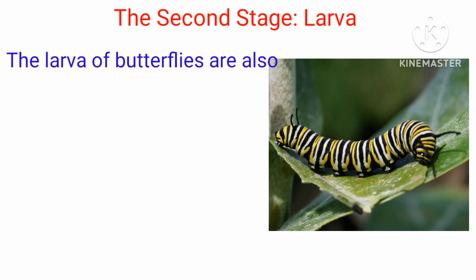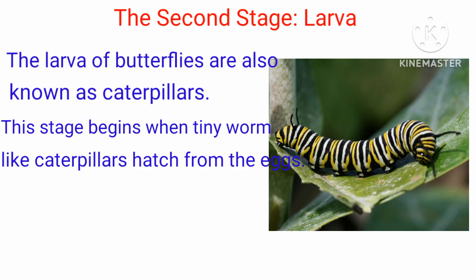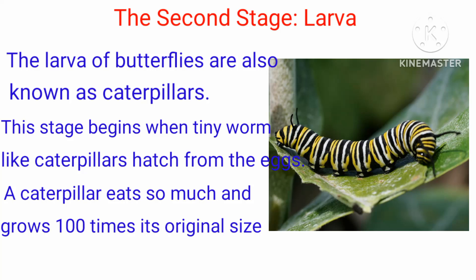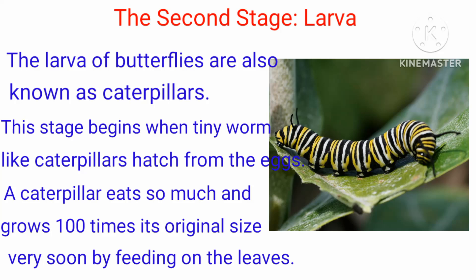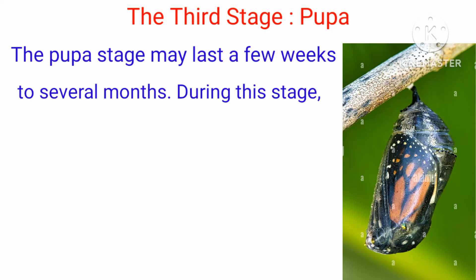The second stage is the larva. The larvae of butterflies are also known as caterpillars. This stage begins when tiny, worm-like caterpillars hatch from the eggs. A caterpillar eats so much and grows a hundred times its original size very soon, by feeding on the leaves.